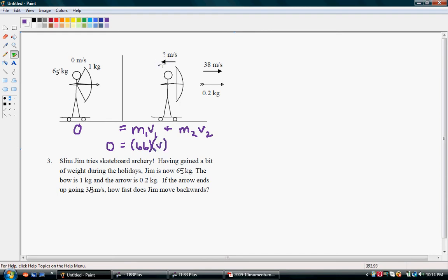And we see that he rolls back a little bit so we know this velocity is going to be negative. So, the mass of the arrow is 0.2 kilograms and the velocity of the arrow is 38 meters per second.